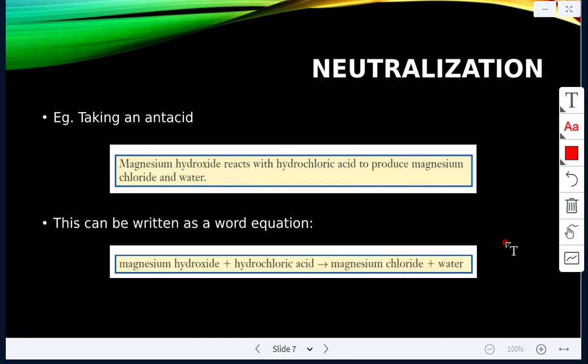Another example is taking an antacid. So we talked about magnesium hydroxide, which is sometimes the substance that is in antacid tablets. It's a base. So magnesium hydroxide, which is the base, will react with the hydrochloric acid, which is the acid in the stomach, and it will produce magnesium chloride. So magnesium chloride is the salt, and then water. That can be written as a word equation. And we'll look at equations more as we go in this unit. But this is what the word equation would look like: magnesium hydroxide plus hydrochloric acid, then there's the arrow which shows the products, magnesium chloride and water. So the reactants are always on the left-hand side of the arrow, and the products are on the right-hand side of the arrow.